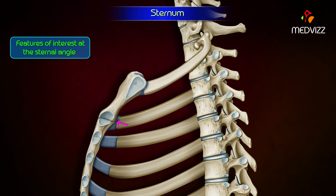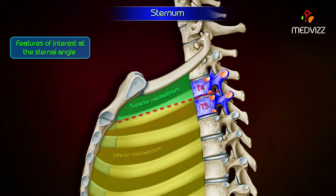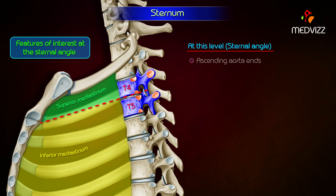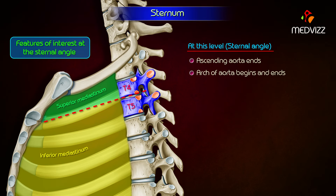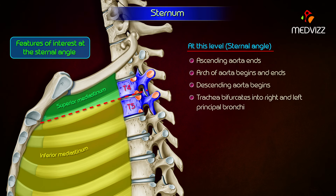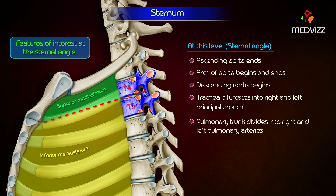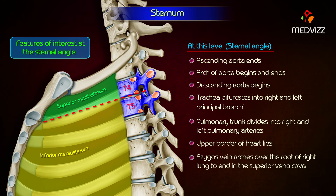The sternal angle lies at the level of the intervertebral disc between T4 and T5. A horizontal plane passing through this level separates the superior mediastinum from the inferior mediastinum. The ascending aorta ends at this level, the arch of the aorta begins and ends at this level, and the descending aorta begins at this level. The trachea bifurcates at this level, the pulmonary trunk divides into right and left pulmonary arteries, the upper border of the heart lies at this level, and the azygos vein arches over the root of the right lung to end in the superior vena cava.